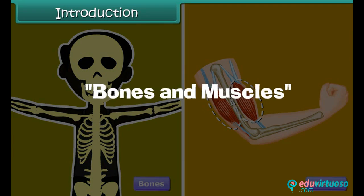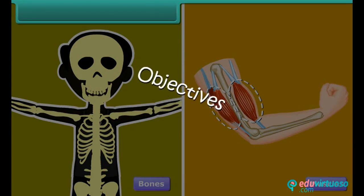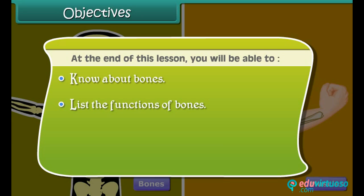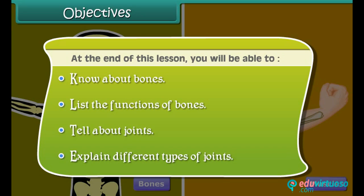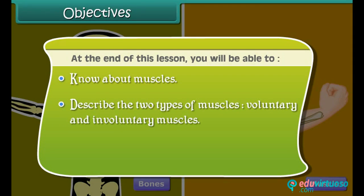Objectives: At the end of this lesson, you will be able to know about bones, list the functions of bones, tell about joints, explain different types of joints, know about muscles, describe the two types of muscles — voluntary and involuntary muscles — and discuss the functions of the muscles.